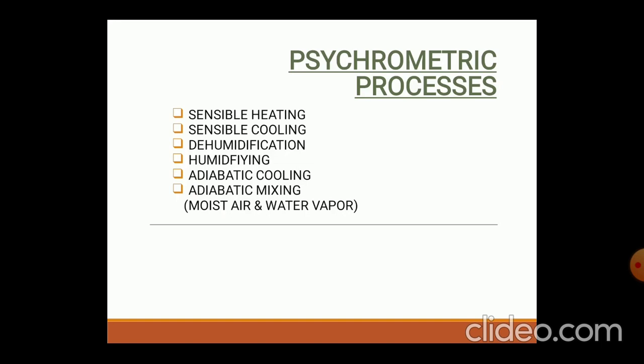The various psychrometric processes are: sensible heating, sensible cooling, dehumidification, humidification, adiabatic cooling, and adiabatic mixing of moisture and water vapor. By controlling these six parameters, we can achieve the process of psychrometry in the various required conditions.